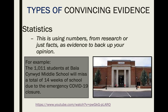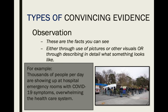The second type is statistics — using numbers from research or facts as evidence to back up your opinion. Numbers are hard to argue with. For example: the 1,111 students at Bella Kinwood Middle School will miss a total of 14 weeks of school due to the emergency COVID-19 closure. That is statistics — quoting any number to help back up your point. That could be a percentage or a specific number. These are strong; it's hard to argue with numbers.